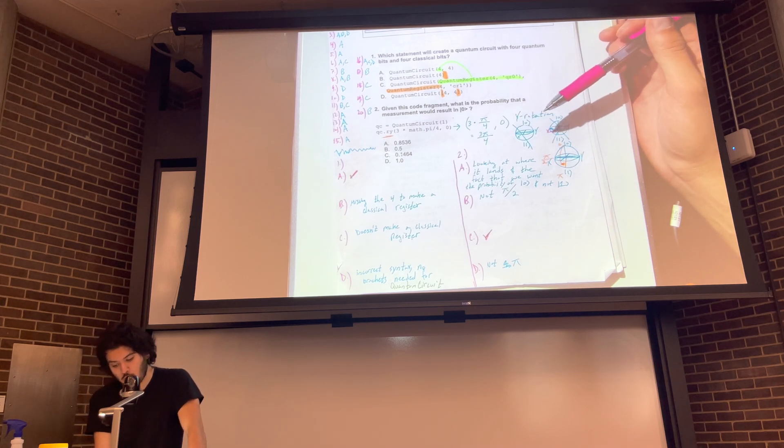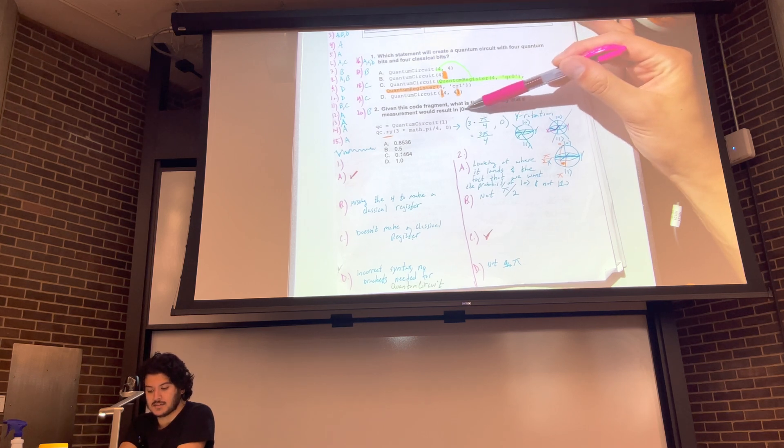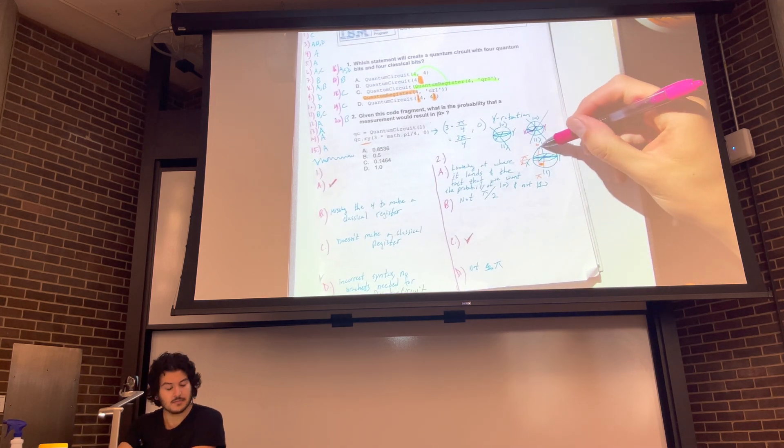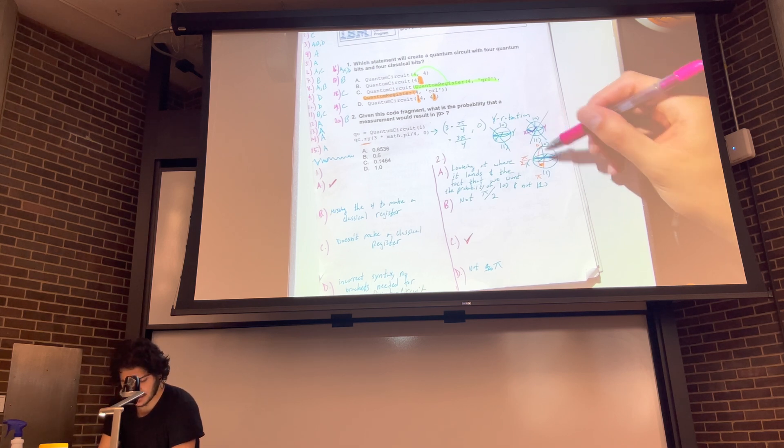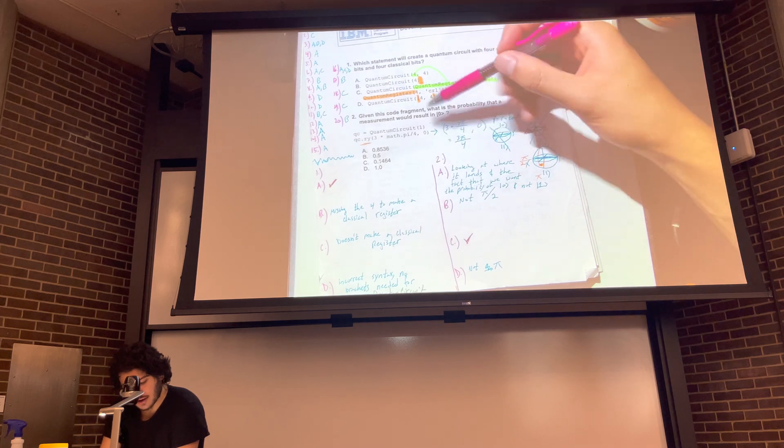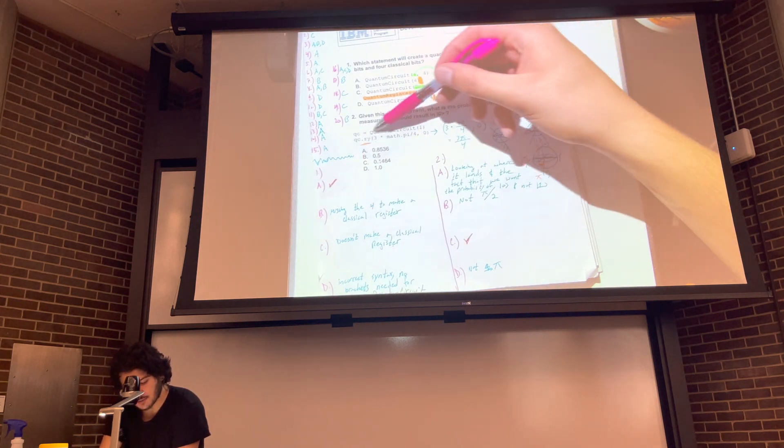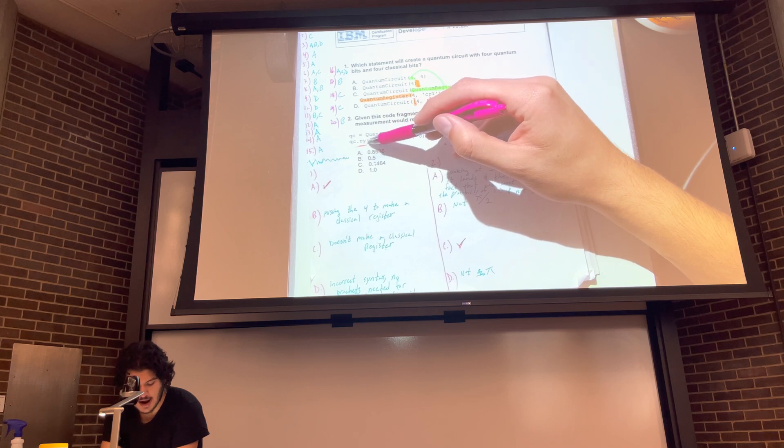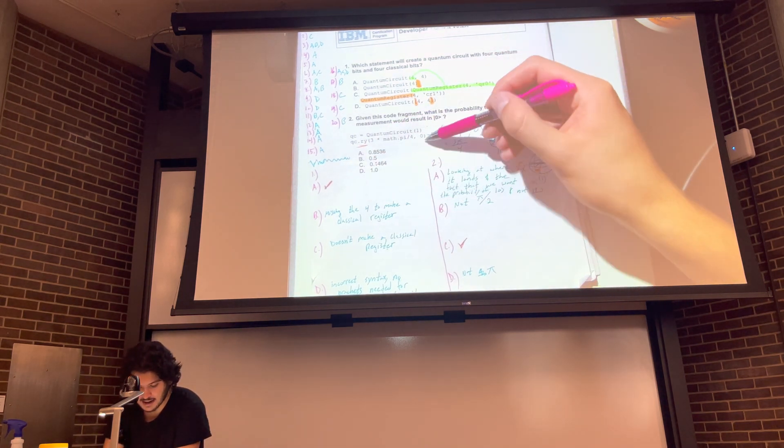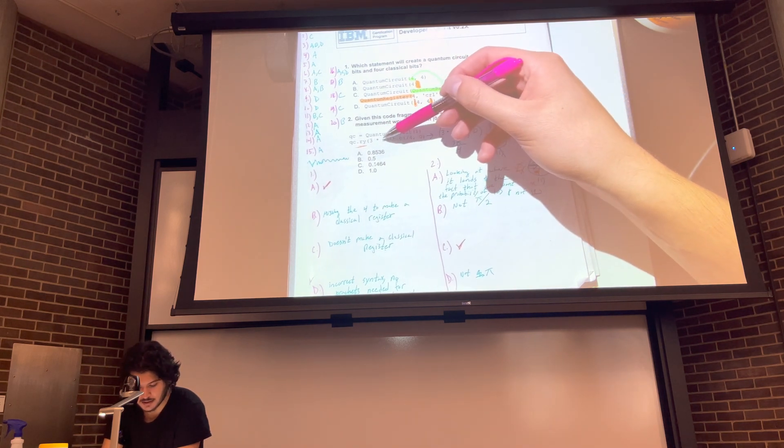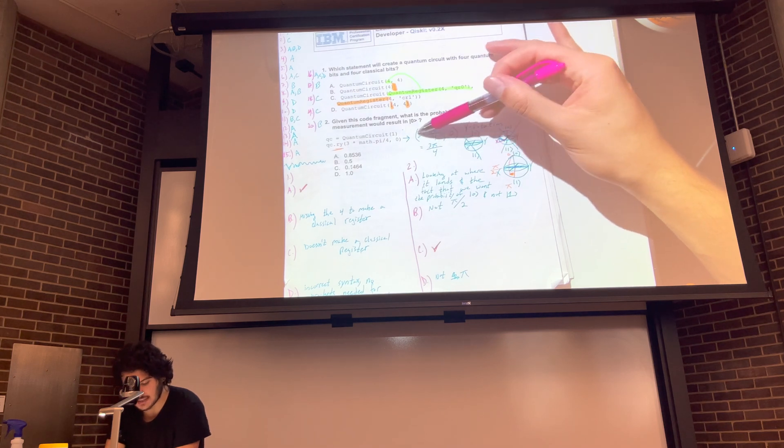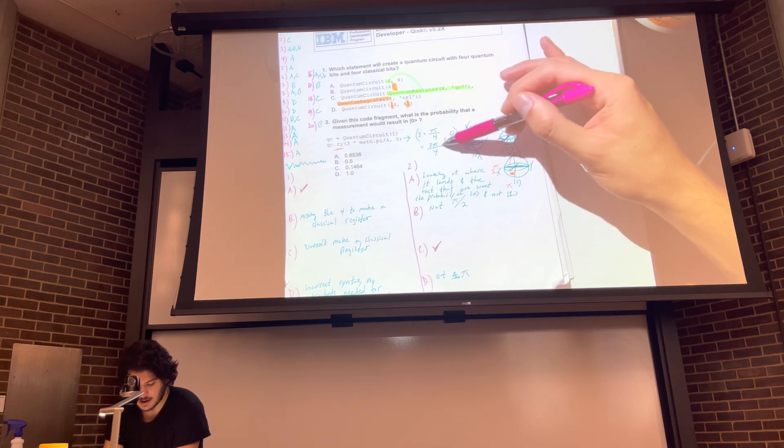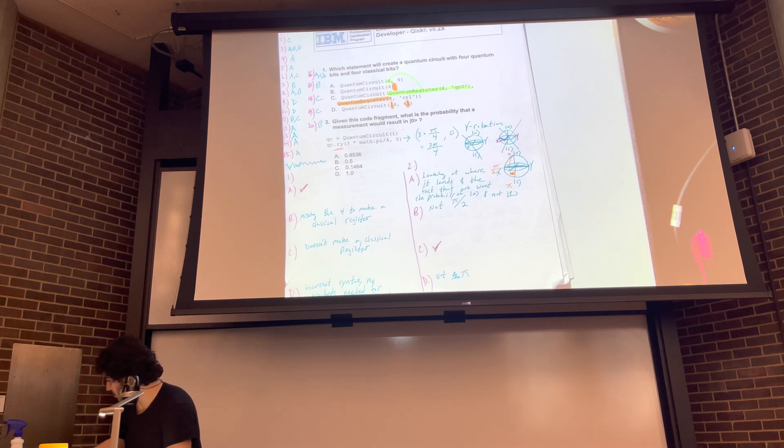Okay, so question two. Given the code fragment, what is the probability that a measurement would result in the state of zero? So again, this is our notation. Zero is right here on the Bloch sphere, which is a way to visualize a quantum state. And one is here on the Bloch sphere. You can see them labeled. So going to the code, first line, QC equals quantum circuit one. So we create the quantum circuit with one qubit. QC dot RY. So a rotation on the y-axis. So the R stands for rotation and then the y-axis. And then the amount. So three times pi over four. So you can see it broken down. Three times pi over four comma zero is the location. So then this simplifies to three pi over four.